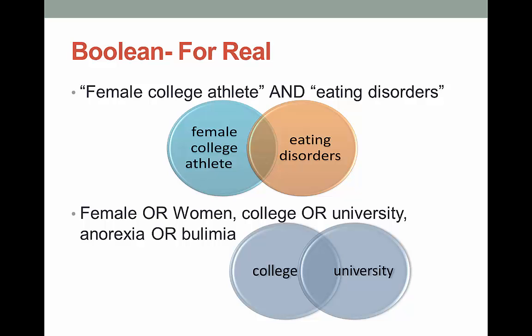The guacamole example is delicious, but it's a little bit silly. So let's go back and see how Boolean works with a real search. When we use AND here, we're telling the database or catalog that we are only interested in books or articles that are about both female college athletes and eating disorders. AND makes your search smaller, so even though there may be 400 articles on female college athletes and 2,000 articles on eating disorders, you might only get 25 when you combine the two.